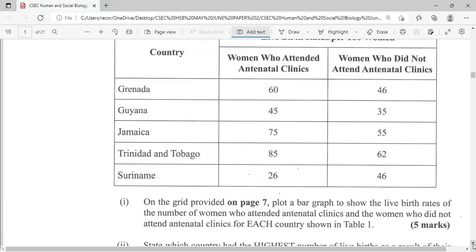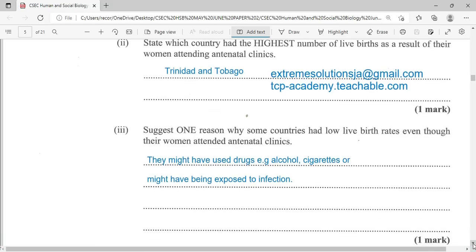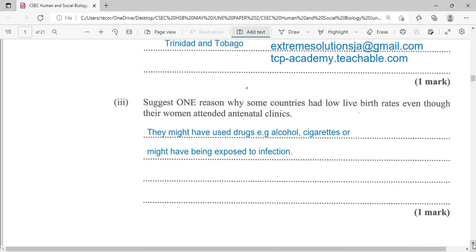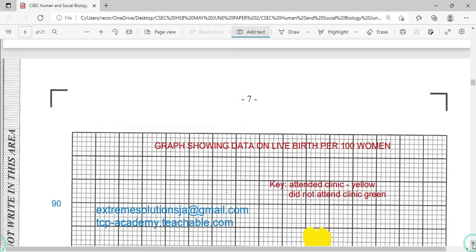Suggest one reason why some countries had low live birth rates even though their women attended the antenatal clinics. They might have attended the antenatal clinic but they might have used drugs, for example alcohol, cigarette, cocaine, and those could have actually affected the birth. They might have been exposed to infection which could have probably led to stillbirth.